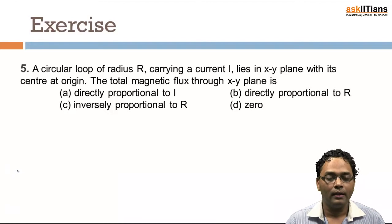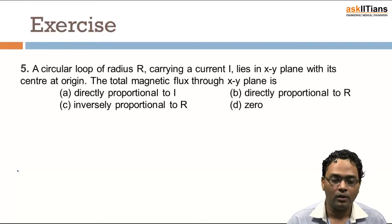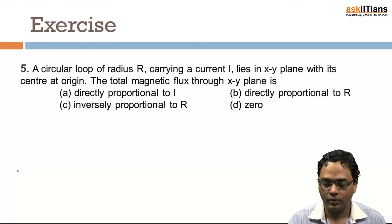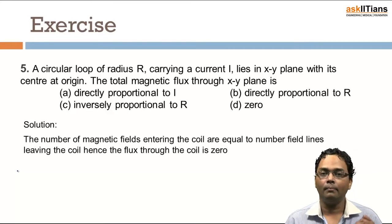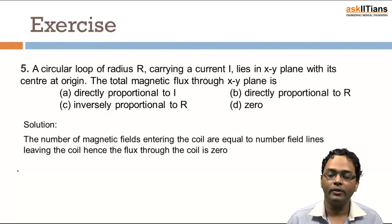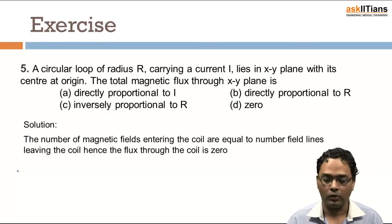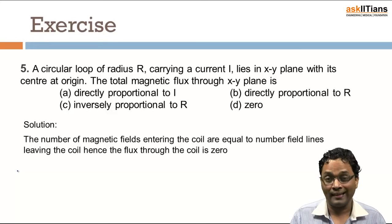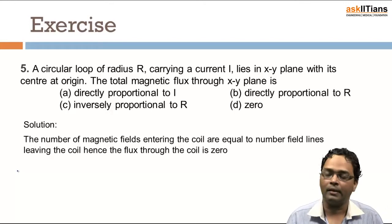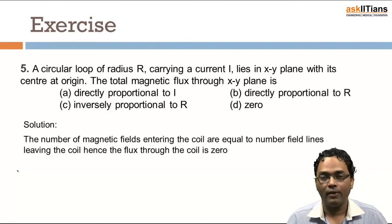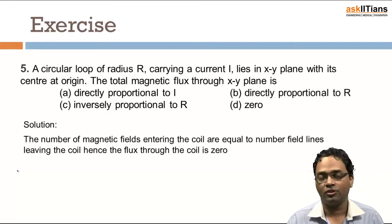Consider an example: a circular loop of radius r carrying current i lies in the xy-plane with its center at the origin. What is the total magnetic flux through the xy-plane? The number of magnetic field lines entering the coil equals the number leaving it. Since no external forces act, the net change in magnetic field lines going in and out is the same, so the total net flux through the plane equals zero.